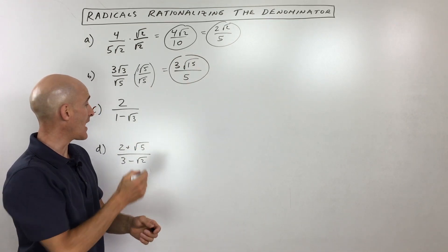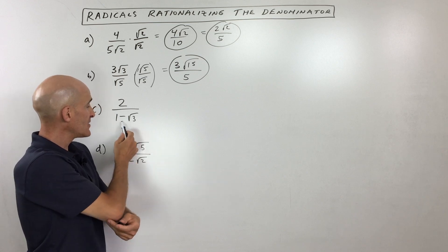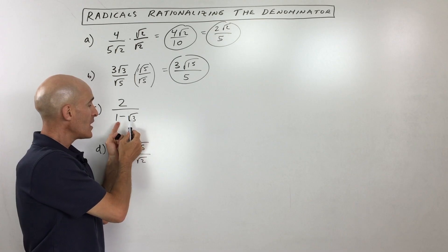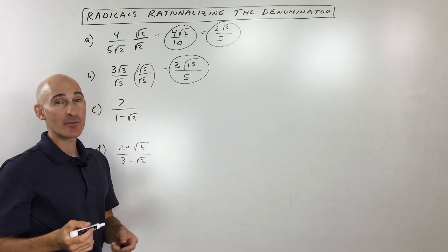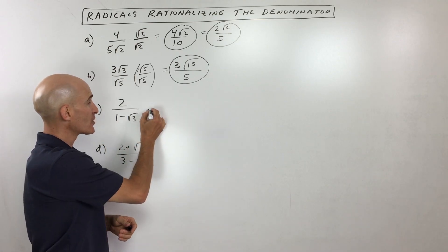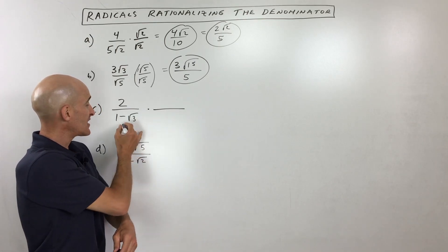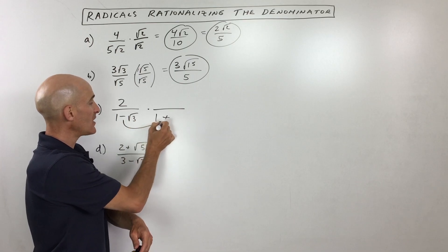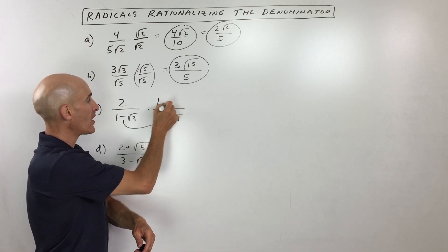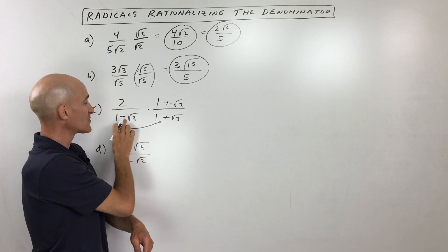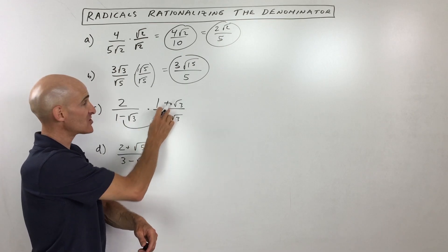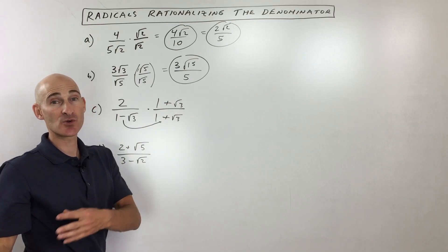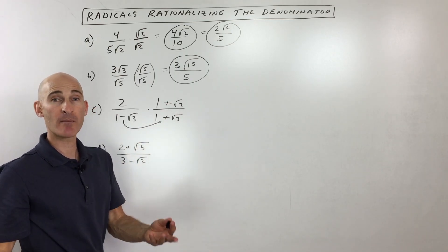Let's go to some other examples now. These two examples have a binomial — 'bi' means two — so there are two terms in the denominator. We don't want the square root in the denominator, but the technique we're going to use here is a little different. We're going to multiply by what's called the conjugate. So instead of multiplying by one minus square root of three, we're going to change the sign in between to the opposite: one plus square root of three. If the sign was plus, I would make it minus — just change the sign between the two terms. We're multiplying top and bottom by the same thing, so it doesn't change the value of the fraction; it's just like multiplying by one.